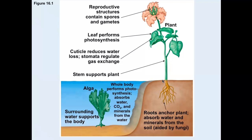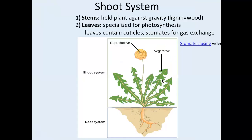So we covered the characteristics of organisms in the water versus on land, and what makes them different. The shoot system — the shoots are everything above the earth — includes stems that hold the plant against gravity. Some plants become woody, and there's a specialized molecule called lignin that helps build the wood, especially in the bark of trees.